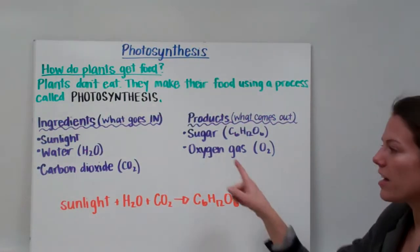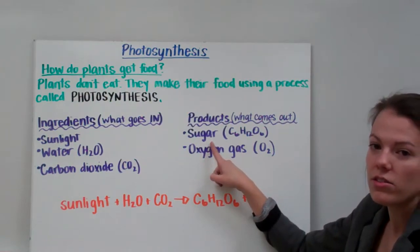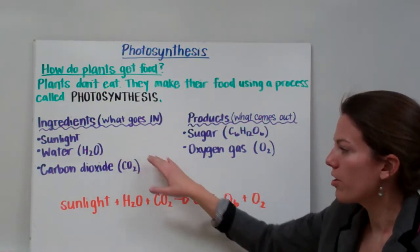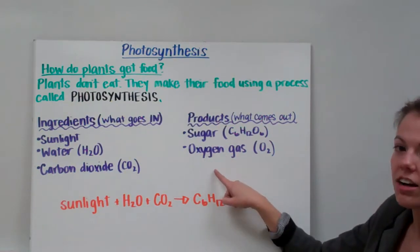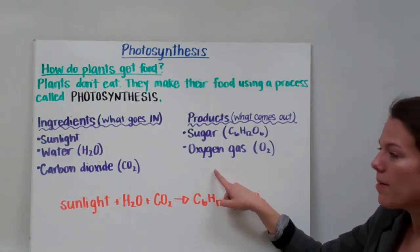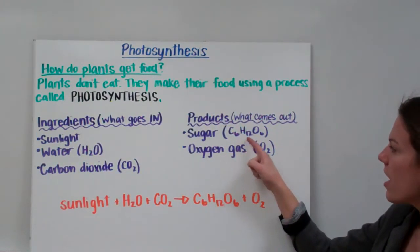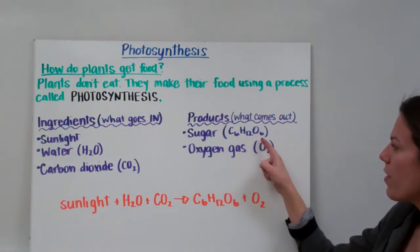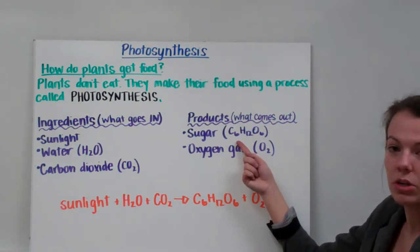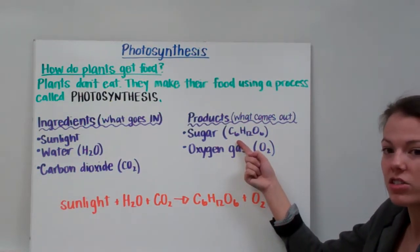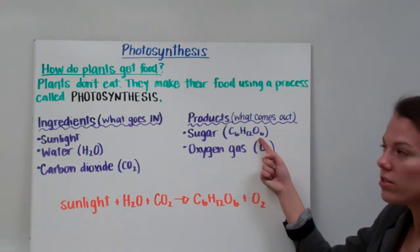The food for plants is actually sugar. When we combine our sunlight, water, and carbon dioxide, we end up making sugar and oxygen gas. The scientific notation for sugar is C6H12O6. It's because this particular sugar, or glucose, has six carbons, 12 hydrogens, and six oxygens.